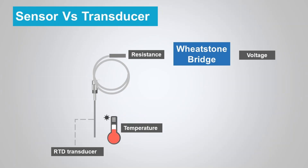On the contrary, a transducer in a measurement system is defined as a device that converts the physical quantity — the non-electrical input — into an electrical signal such as resistance, capacitance, and so on. This electrical signal obtained from the transduction process needs further conversion to make the signal usable, through use of a signal conditioning circuit. For example, an RTD is a temperature transducer that senses temperature (the physical quantity) and converts it into resistance. A signal conditioning circuit such as a Wheatstone Bridge is required to convert resistance into voltage. This is the key difference between sensor and transducer in a measurement system.